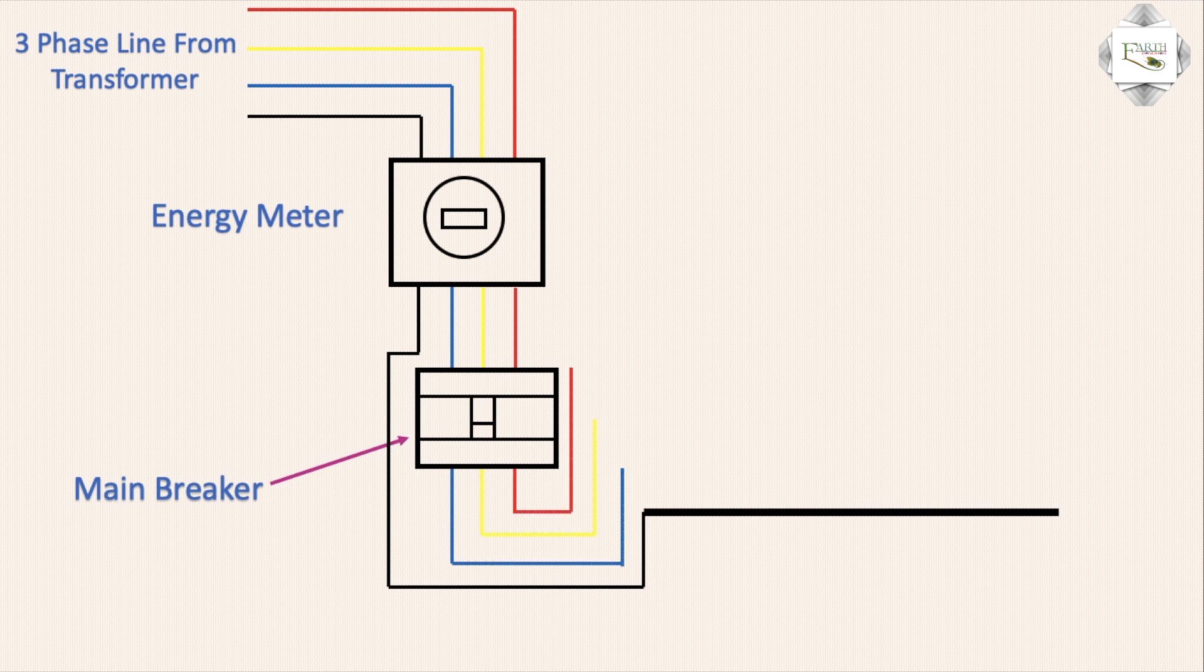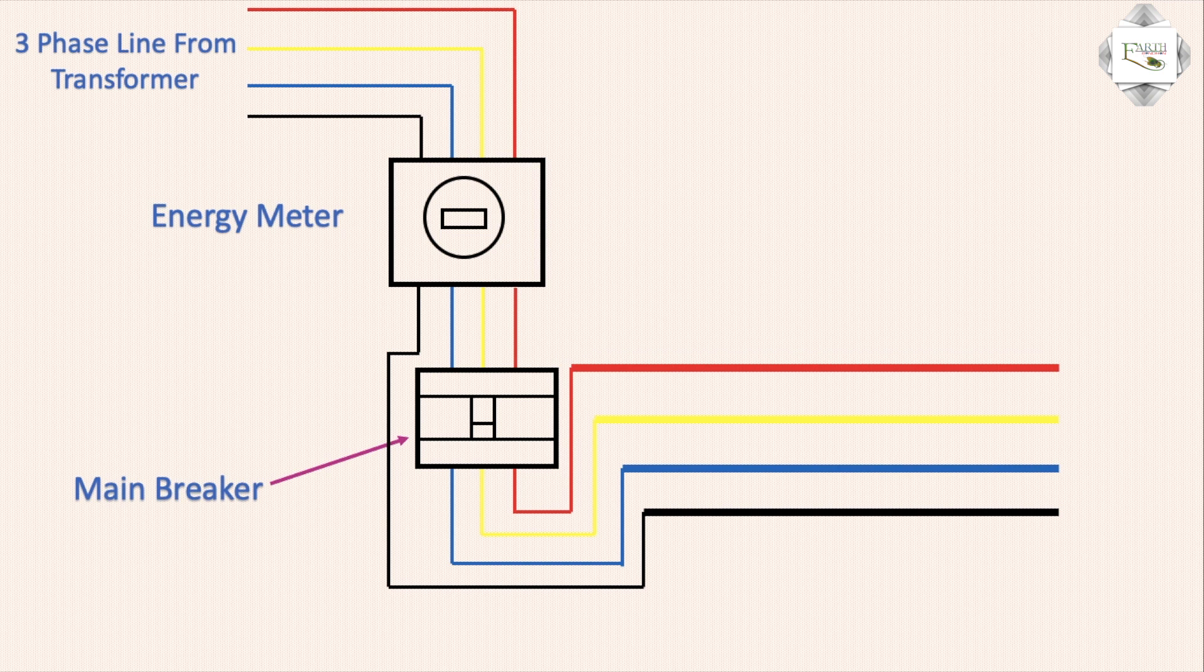The MCB output connects to the electric bar with red, yellow, and blue connections for the three-phase lines. The energy meter to MCB circuit breaker connection, with input and outlet to the electric bar, connects to the bus bar. The manually controlled MCCB circuit breaker provides on-off control for the main line.